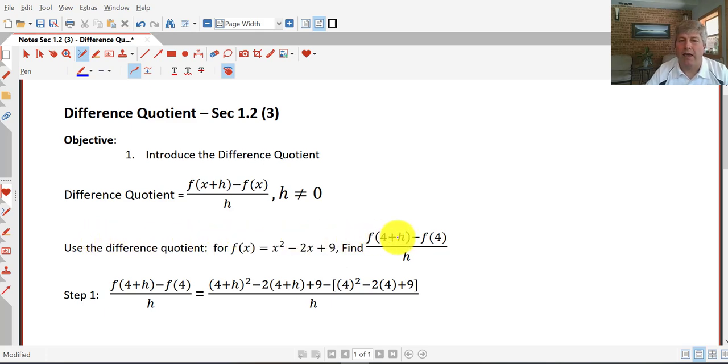And we want to find f of 4 plus h minus f of 4. So we're going to replace x with 4 plus h in our function, and then we're going to replace x with 4, and we're going to subtract the two.